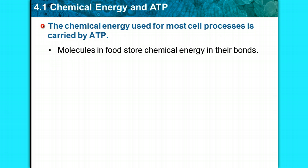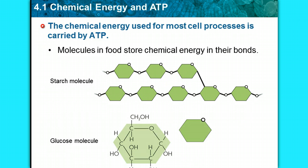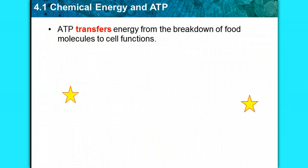The molecules we use in food store chemical energy in their bonds. We've studied that already — we've looked at starch molecules and glucose molecules, complex carbohydrates in starch versus simple sugars like glucose. ATP transfers energy from the breakdown of food molecules to cell functions.